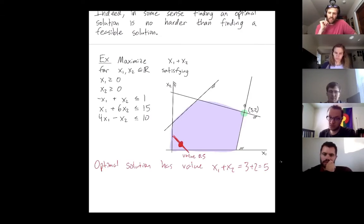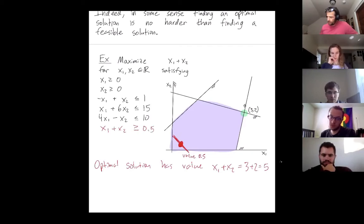You can iterate this process. So we're going to add another constraint. So our new constraint is now going to be x1 plus x2 is at least 0.5. If you want all your inequalities to be bounded from above, you could multiply everything by negative one in this new constraint.